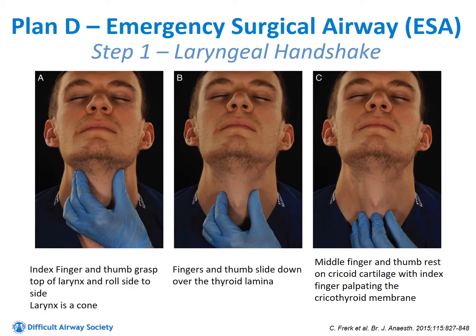Our first step is something called a laryngeal handshake. We're going to use our index finger and thumb to grasp the top of the larynx, roll it from side to side to clearly identify it — it's cone shaped. Then we slide our fingers down to find the thyroid component, then rest our middle finger and thumb on either side of the cricoid cartilage, while the index finger palpates the soft spot and little divot between the cricoid cartilage and the thyroid cartilage.